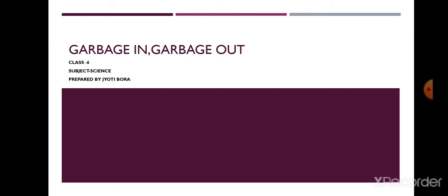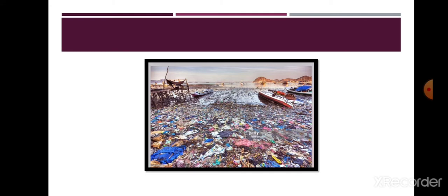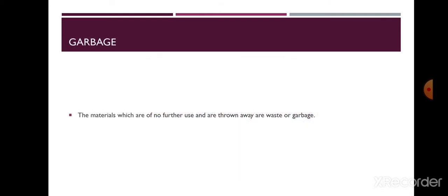This waste or garbage needs to be properly managed, or else we will face the situation shown in this picture. It is a site of a beach which is mostly covered with plastic waste, and this plastic waste is very dangerous for aquatic life and for humankind as well. Today we are going to discuss various aspects of garbage and how we can manage garbage properly so that it does not create any problem.